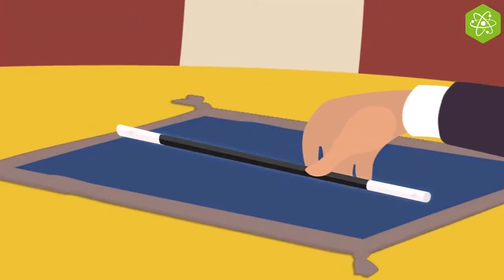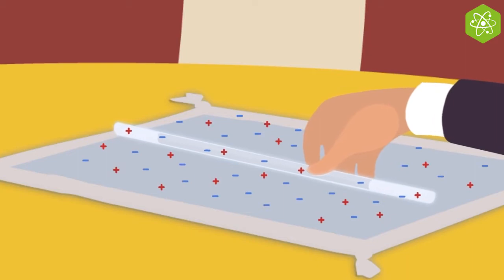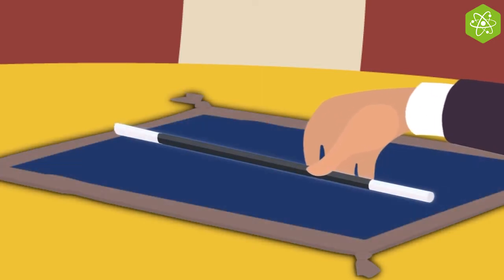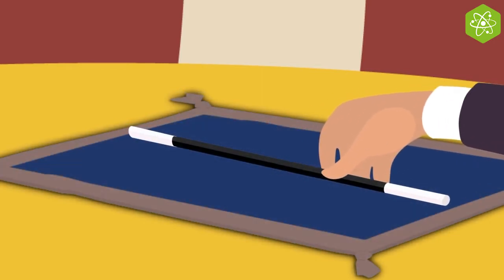The tiny charges contained in objects can move and transfer from one object to another. When this occurs, neutral objects become positively or negatively charged.